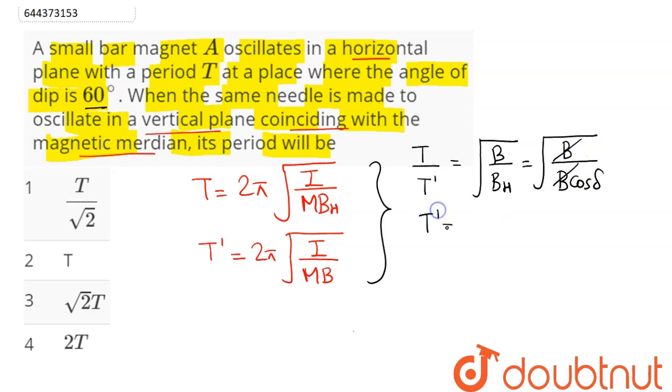Substituting the value, this comes as T/√(cos 60°). cos 60° is 1/2, hence the new time period comes as T/√2.